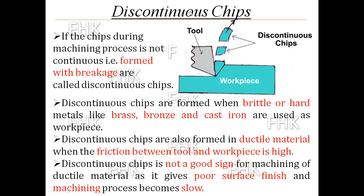The second type is the discontinuous chip. If the chip during machining is not continuous — that is, it is formed with breakage or in small segments — those chips are called discontinuous chips. Discontinuous chips are formed when brittle or hard metals like brass, bronze, and cast iron are used as workpiece material. You can see in the image the discontinuous chips with small segments.